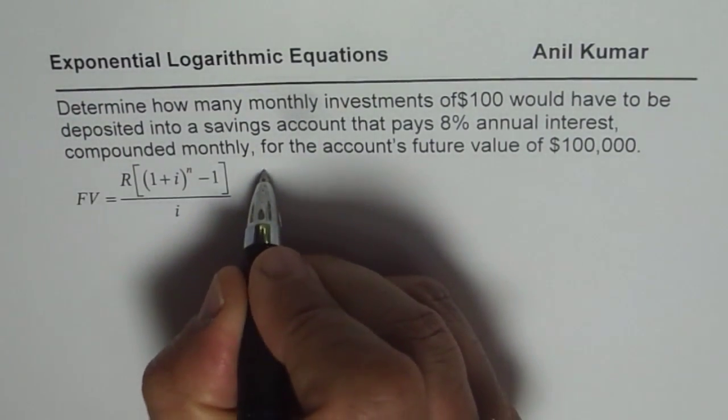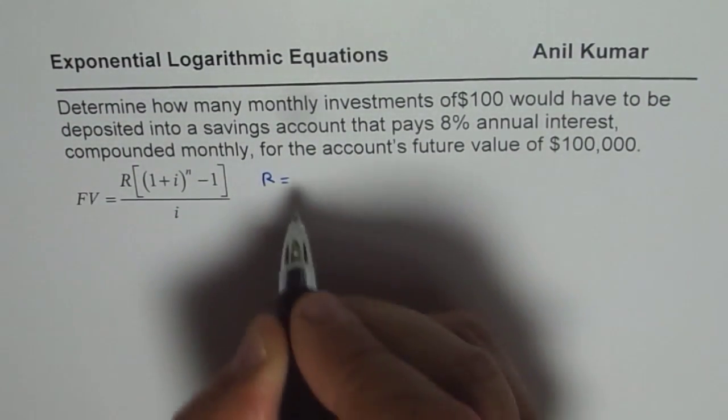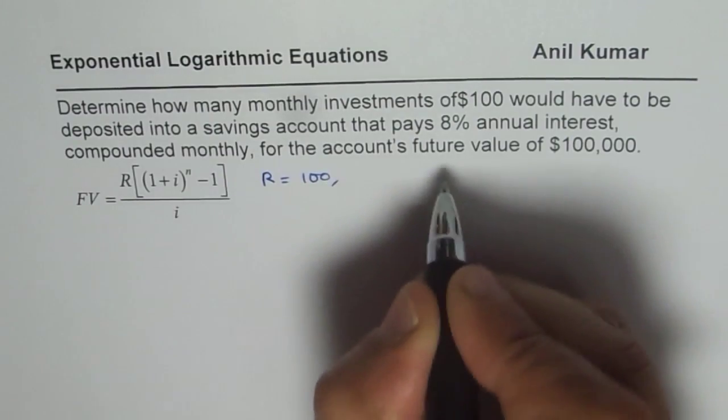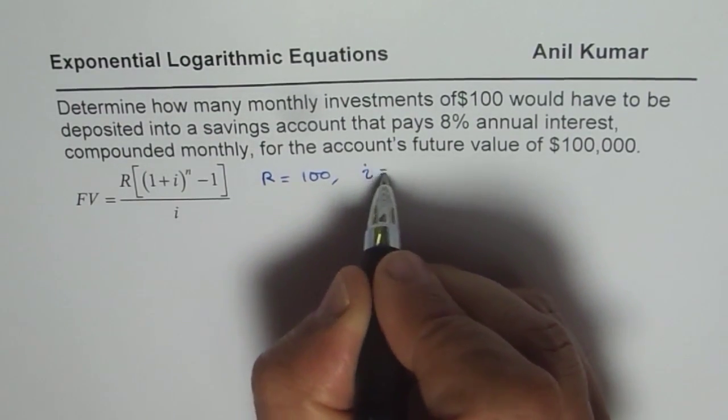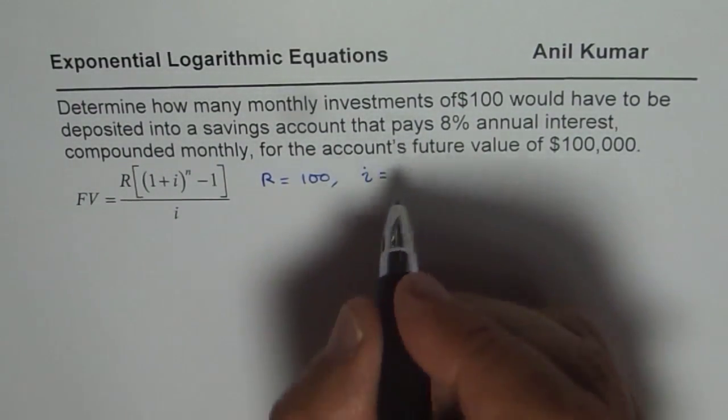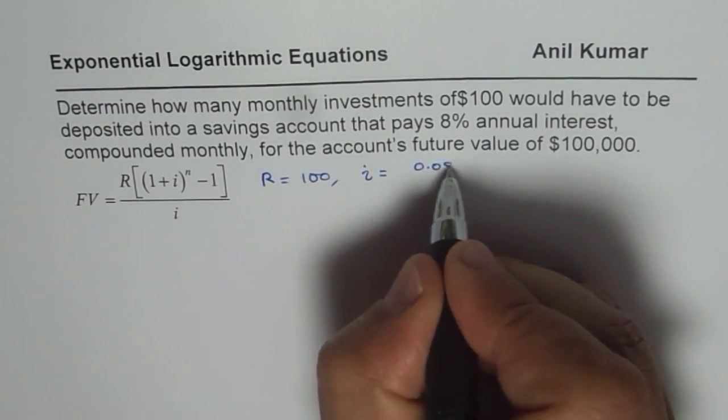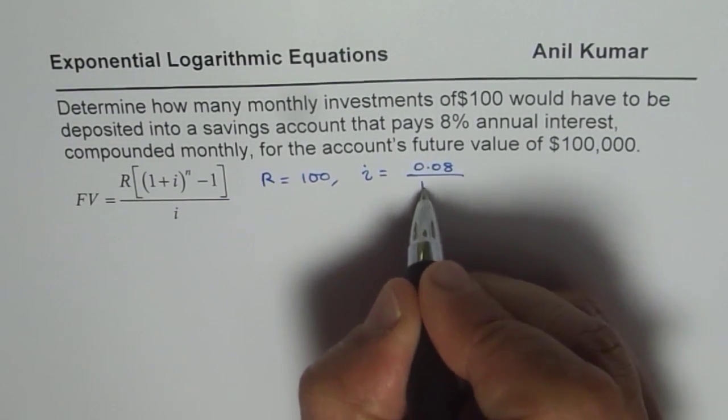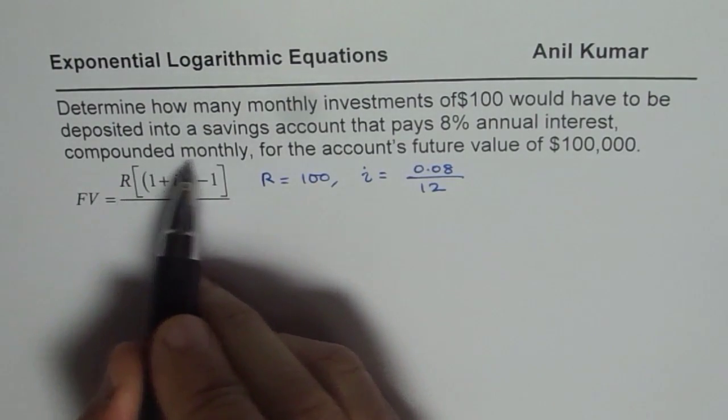What we are given is R, which equals $100. Interest i should be calculated as 8%, which is 0.08 divided by 12 since it is compounded monthly.